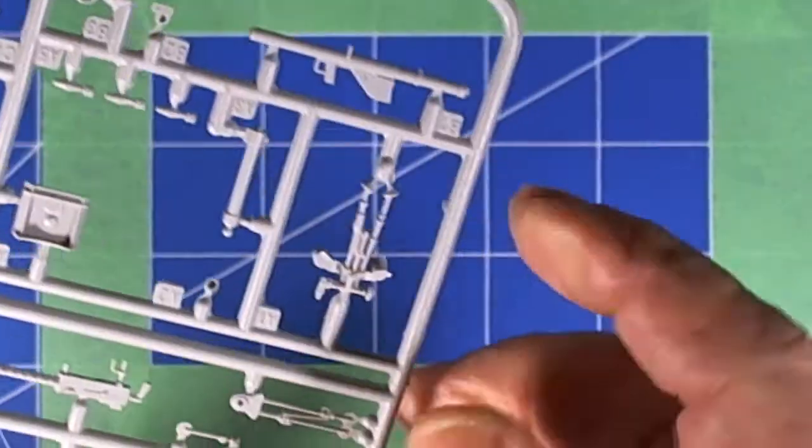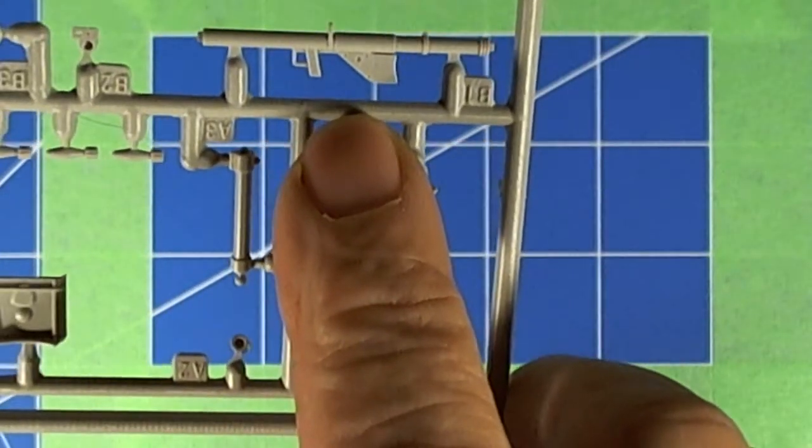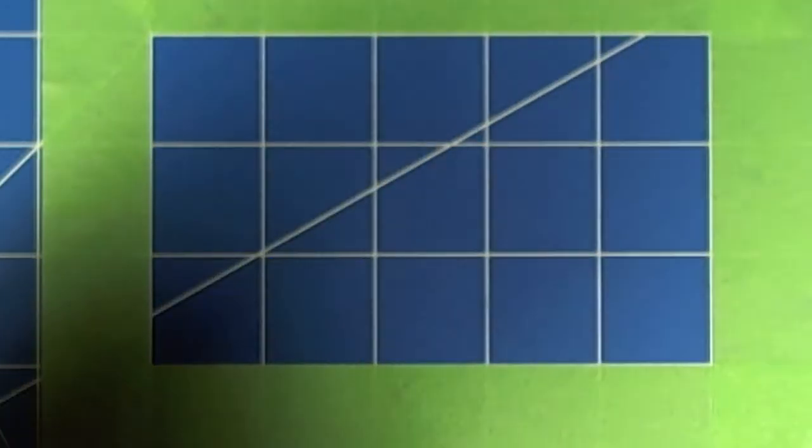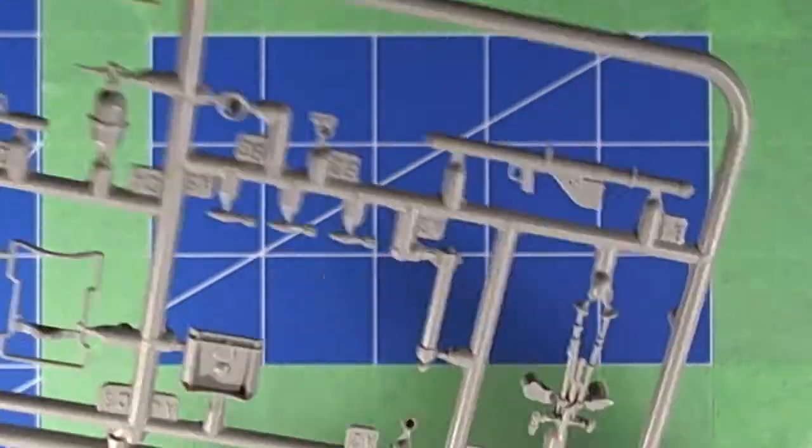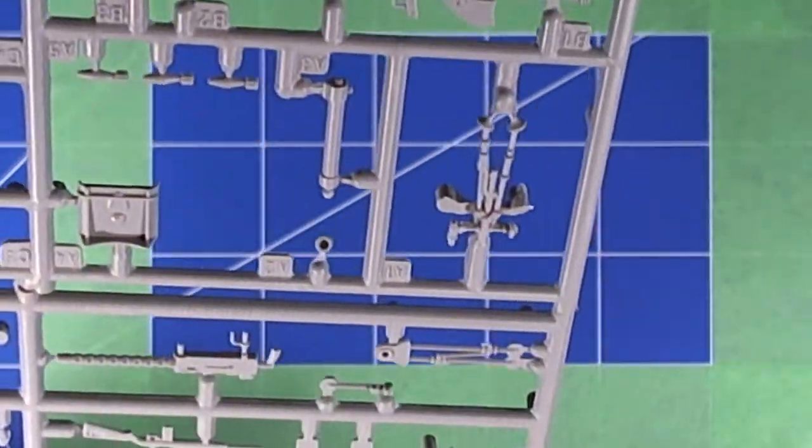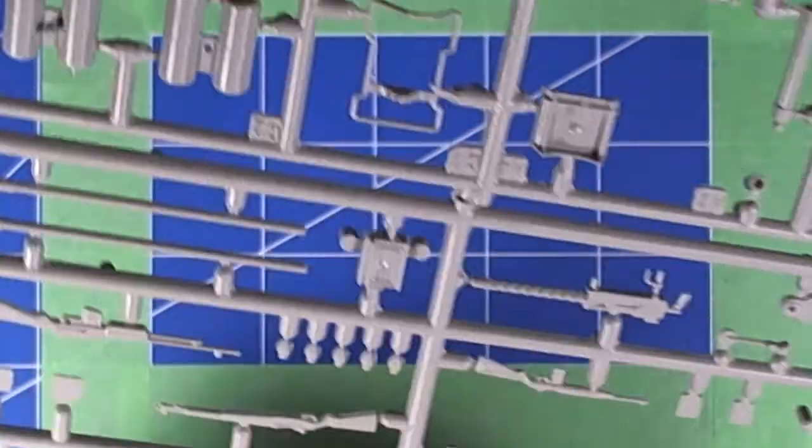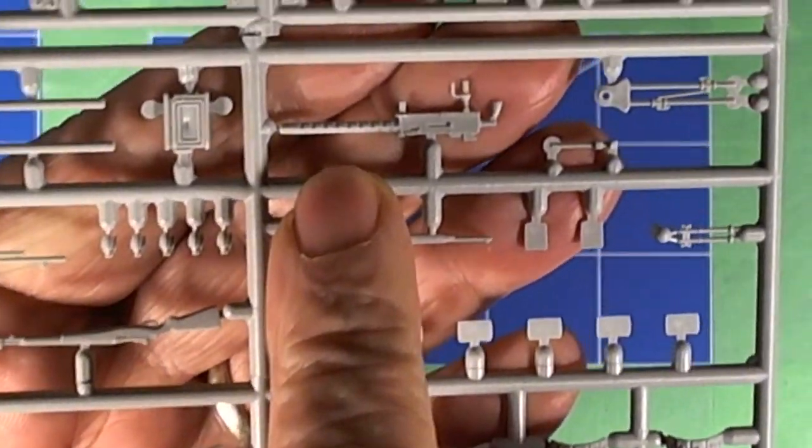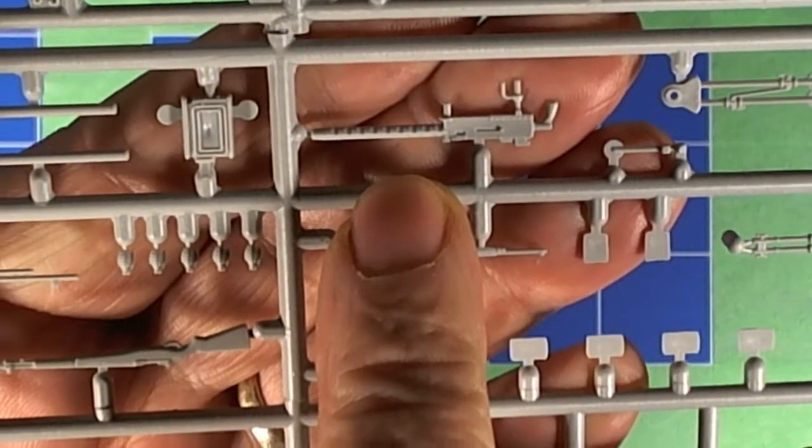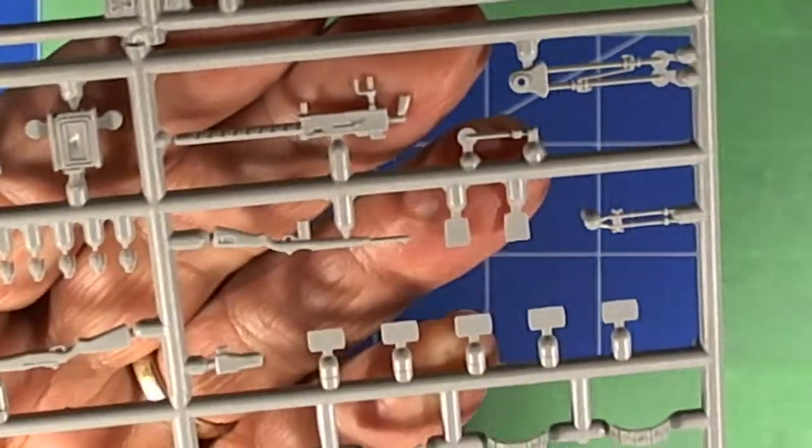Here we have a bazooka, interesting, no seam on the bazooka except where you nip it off, a little bit of sanding there but nonetheless. Here we have the bandoliers, torpedoes as they're known. If we look at the GPMG, the 30 caliber machine gun, absolutely beautiful detail. That's that for this particular review.